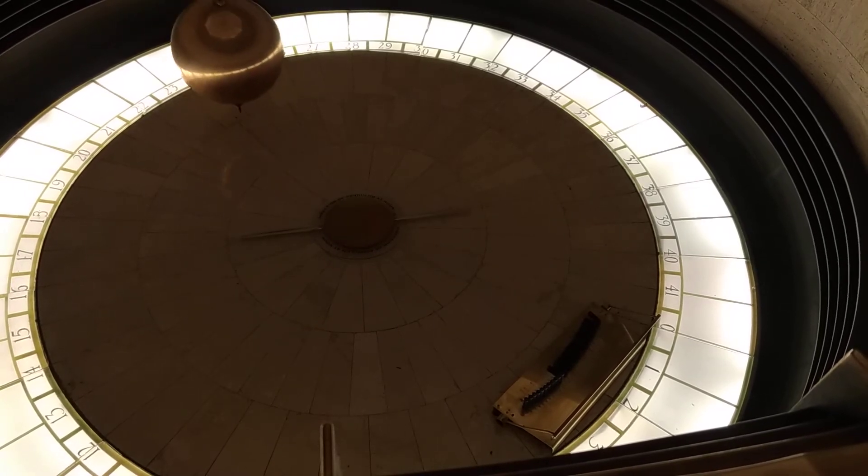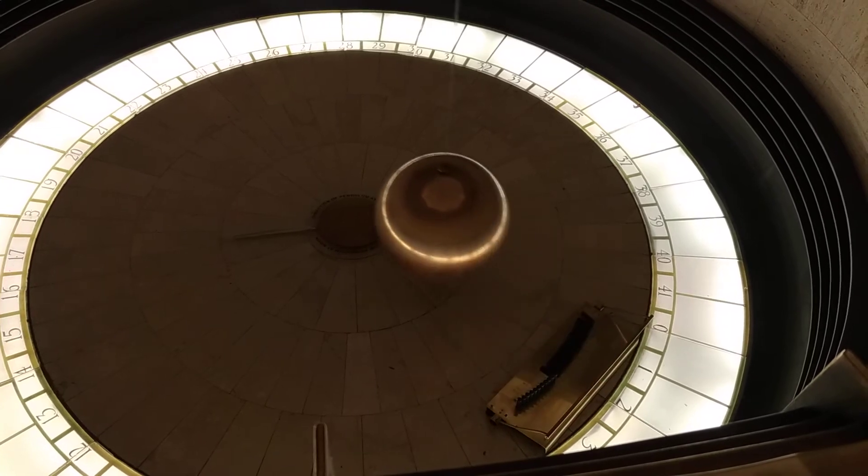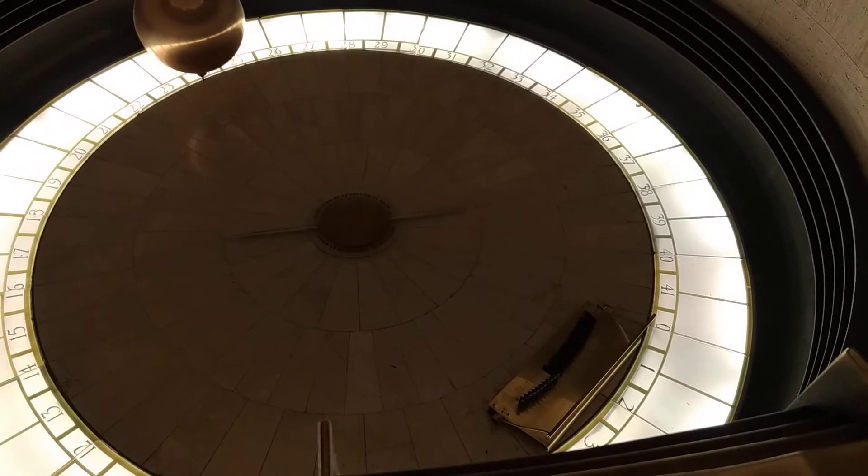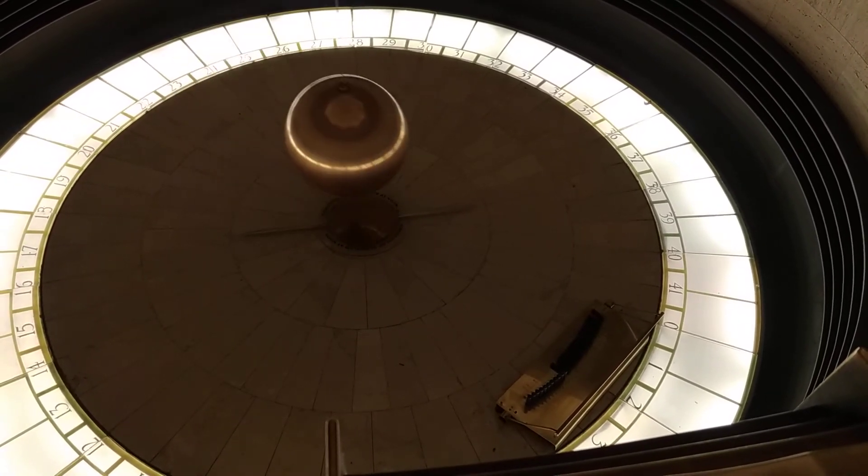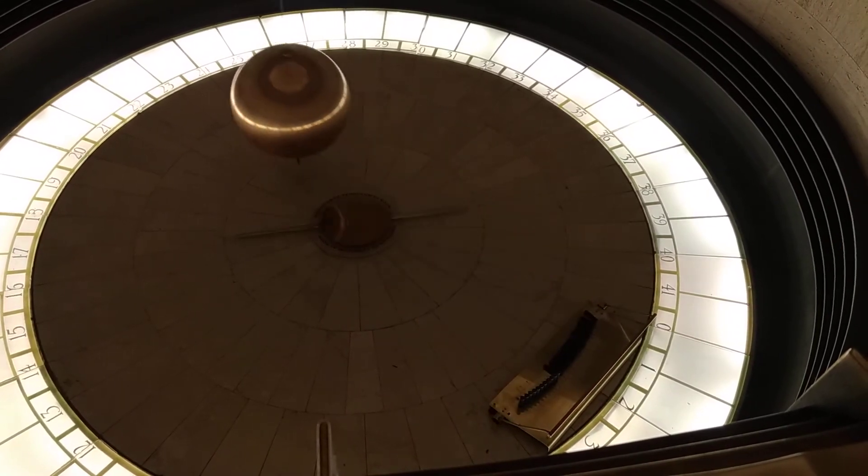The Coriolis effect works with the centrifugal. You just take the sine of your latitude. We're at 34 degrees. It's simple trigonometry. Take the sine of your latitude, divide that into 24 hours, and you'll get 42.